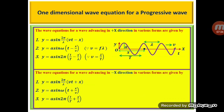A progressive wave advancing in a particular direction is called a one-dimensional progressive wave. A progressive wave advancing in the positive x direction can be represented by the relation: y equals a sin(2 pi by lambda into (vt minus x)), where y is the displacement of the particle at time t, x is the displacement of the particle from the source point, a is the amplitude of the wave, lambda is the wavelength, and v is the wave velocity. If we take v common from the bracket, we get y equals a sin(2 pi by lambda into v into (t minus x by v)). Since v by lambda can be replaced by f, and 2 pi f equals omega (the angular frequency), equation 1 becomes y equals a sin(omega into (t minus x by v)).